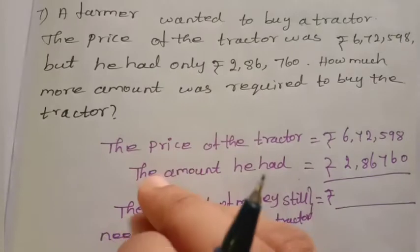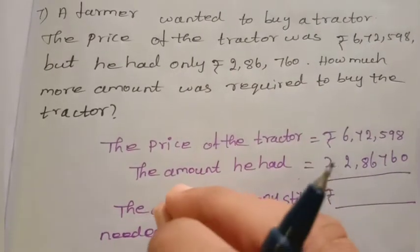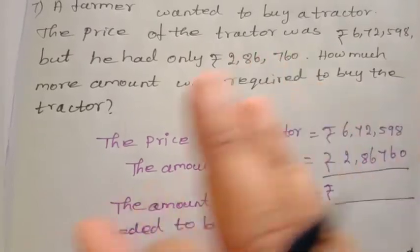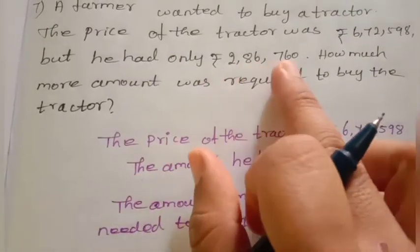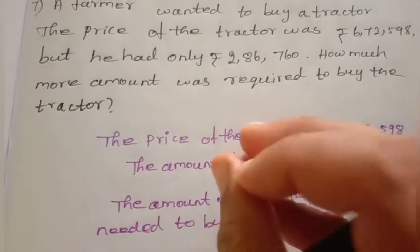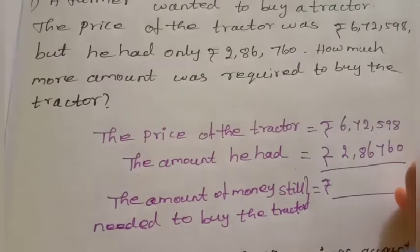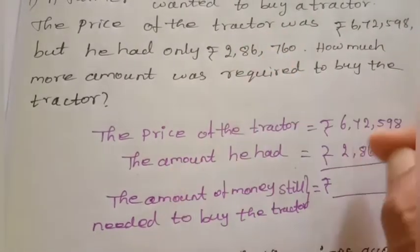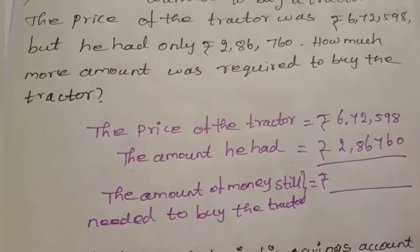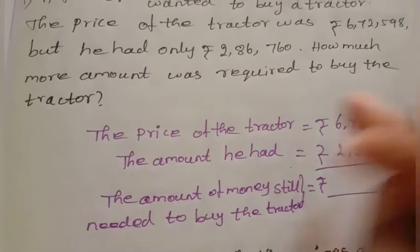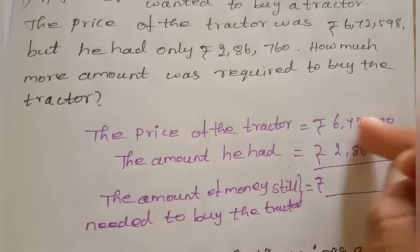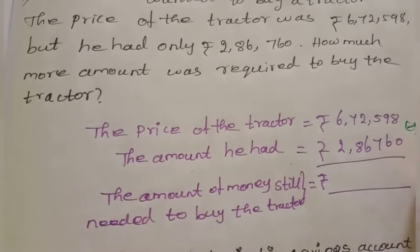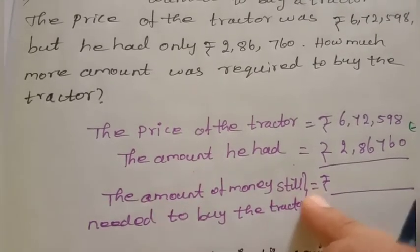A farmer wants to buy a tractor. The price of the tractor is Rs. 6,72,598. Write the tractor's price and the amount he had. To find how much more is needed, subtract the amount he had from the price of the tractor.